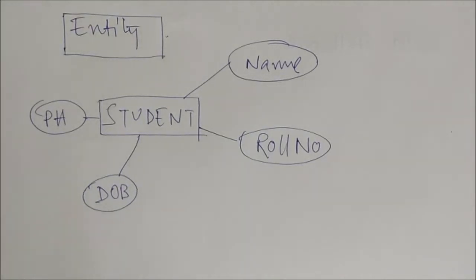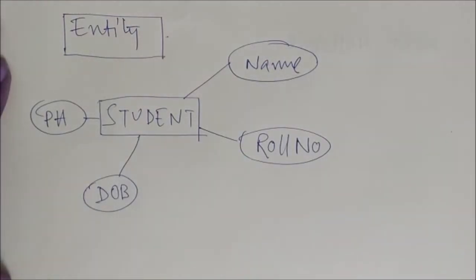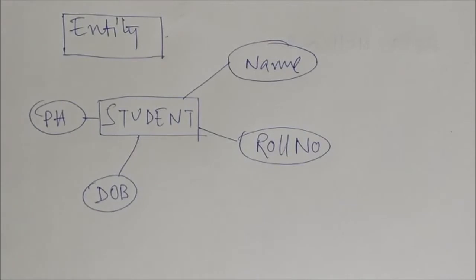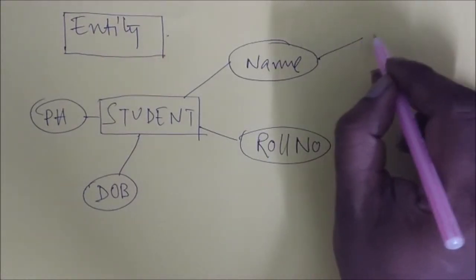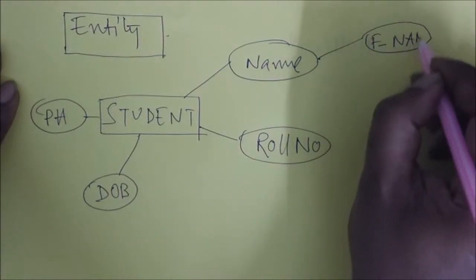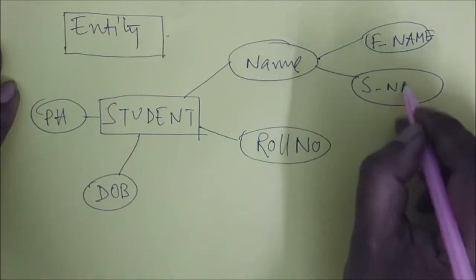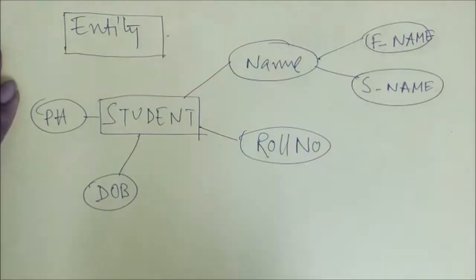Now, there are different kinds of attributes. First is composite attribute. A composite attribute is an attribute which is built off with multiple attributes. For example, name can be built from first name and second name. So it is a composite attribute.